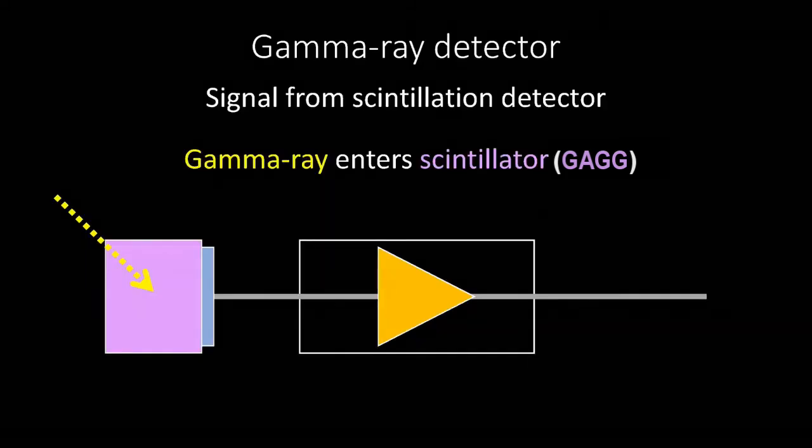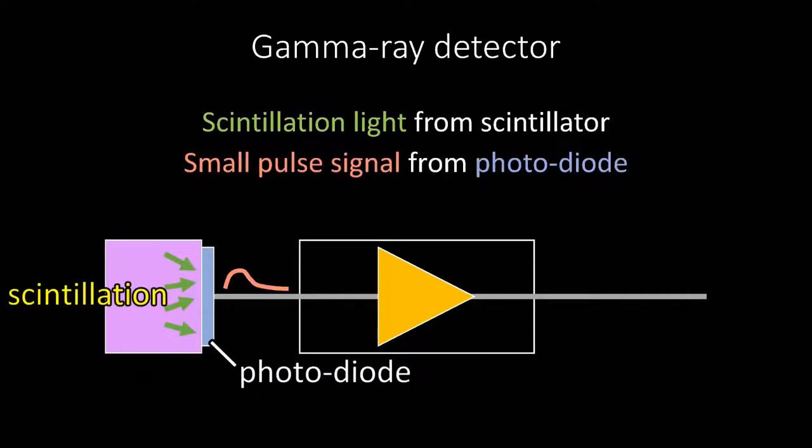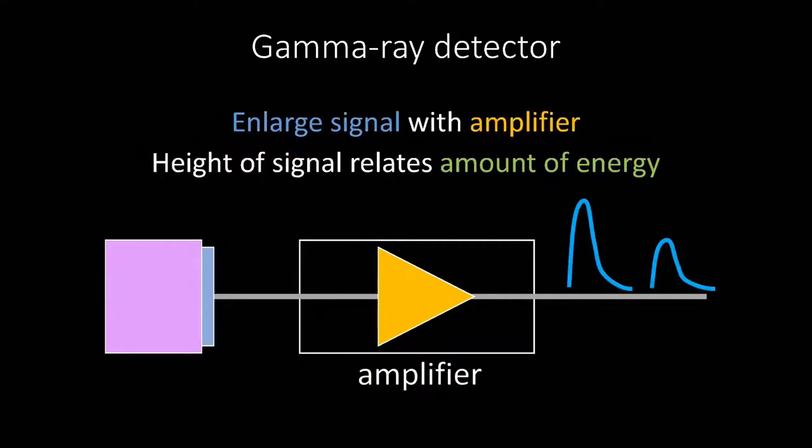The following is an explanation of the principle of the experiment. First, I will explain the principle of the detector. When gamma rays enter the scintillator, the scintillator emits light, and the photodiode that receives the light outputs a small signal. When this signal is passed through an amplifier, it becomes a larger signal. The size of the output signal is related to the amount of energy transferred to the scintillator by the incident gamma rays.